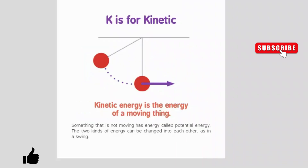K is for kinetic. Kinetic energy is the energy of a moving thing. Something that is not moving has energy called potential energy. The two kinds of energy can be changed into each other, as in a swing.